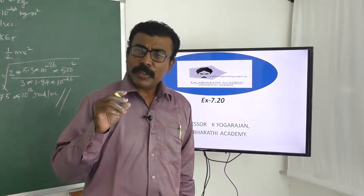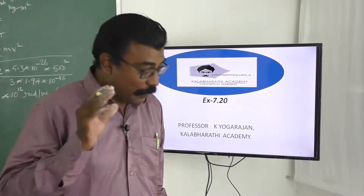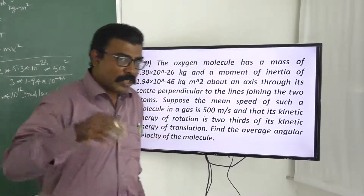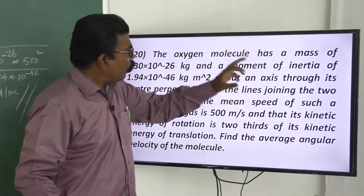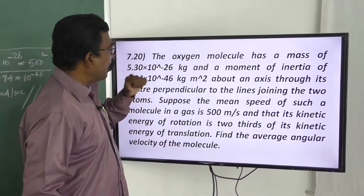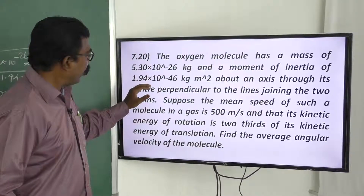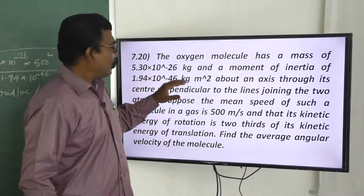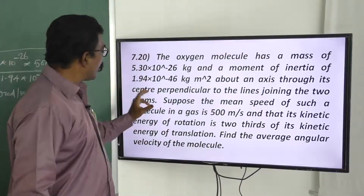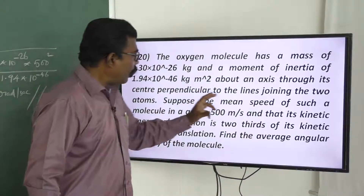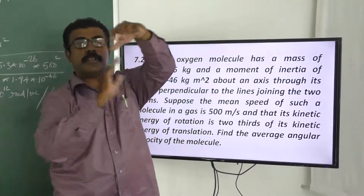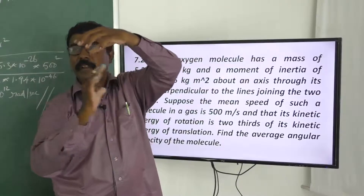We have a simple but very interesting problem. We are going to study the oxygen molecule, which has a mass of 5.3×10⁻²⁶ kg and a moment of inertia of 1.94×10⁻⁴⁶ kg·m² about an axis through its center perpendicular to the line joining the two atoms. The molecule is both revolving and moving.